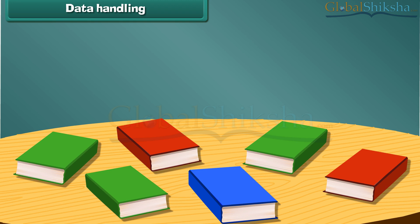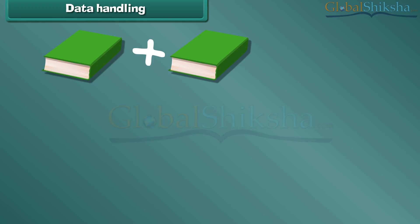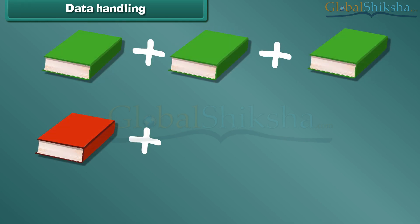Now let's count and arrange these books in the bookshelf. How many red colored books are there? One and two — there are two red books. How many blue books are there? One — there is only one blue book. How many green colored books do you see? One, two, three — there are three green colored books.